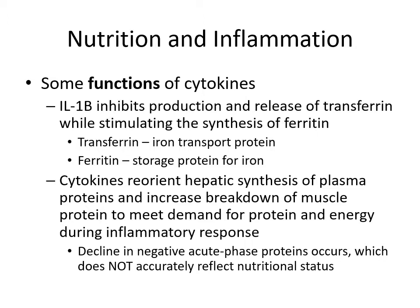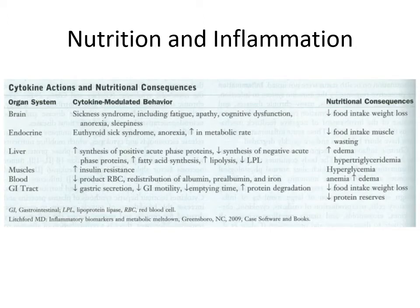With a decline in negative acute phase proteins, this doesn't always accurately reflect nutrition status. So when we see low albumin or low prealbumin, we want to consider that the patient may be in an inflammatory state. Here we have an example of cytokine actions and nutritional consequences, showing specific organ systems on the left with cytokine-modulated behavior and the nutrition consequences on the right.